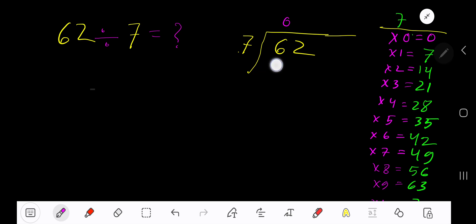0×7=0, subtract 6, bring down the next digit. 7 goes into 62 how many times? Look, 9×7=63 which is greater, so 8 times. 8×7=56, subtract, you are getting 6.